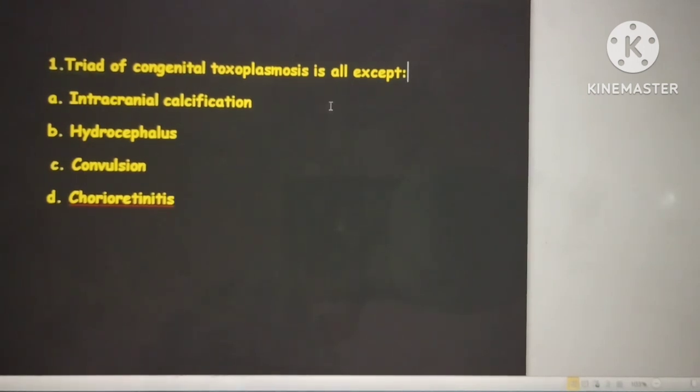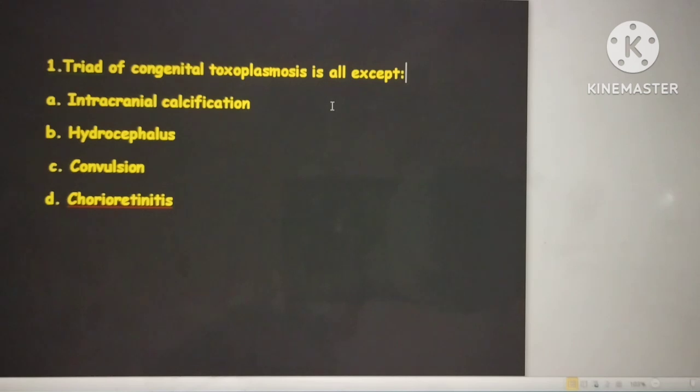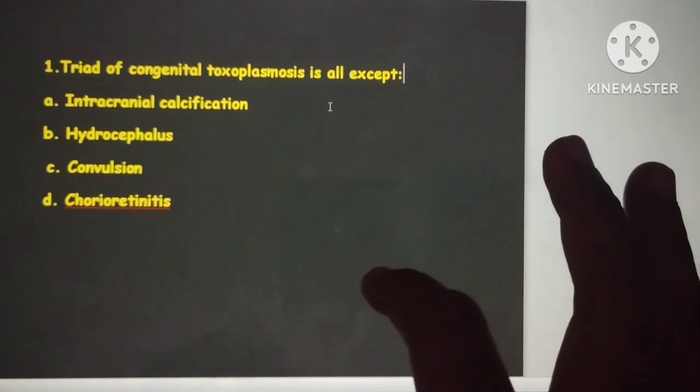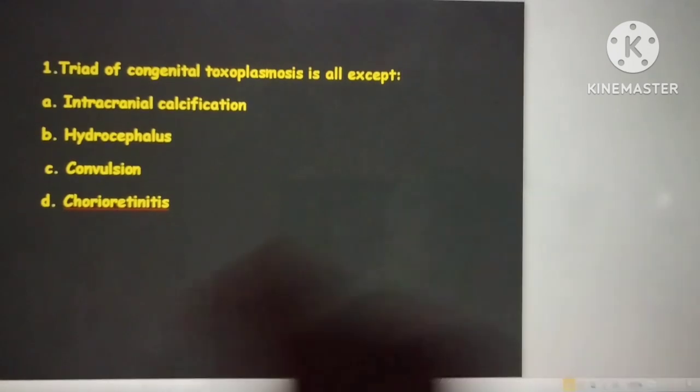Hello friends, today we discuss previous year questions. The first question is: the triad of congenital toxoplasmosis is all except: intracranial calcification, hydrocephalus, convulsion, and chorioretinitis.